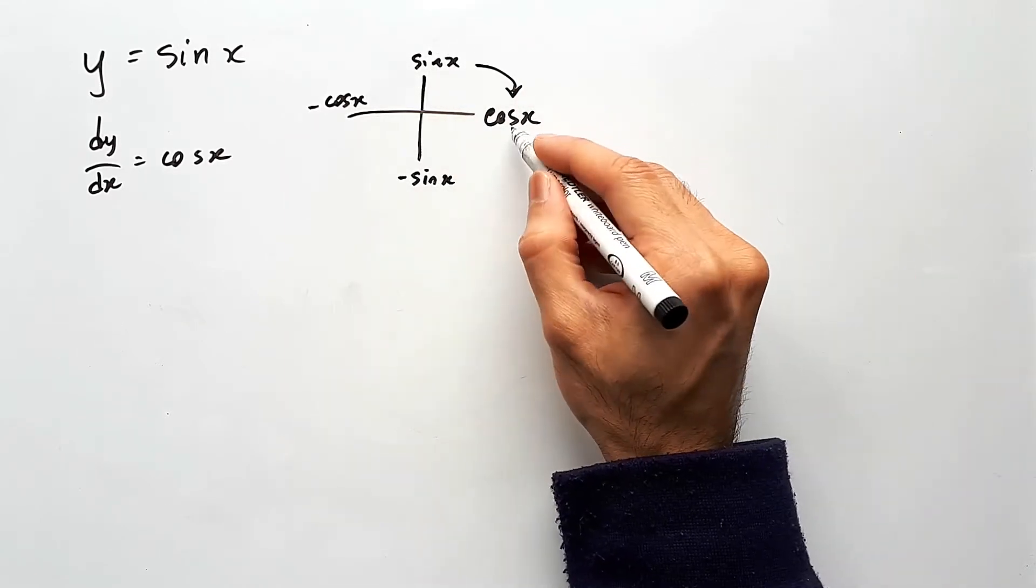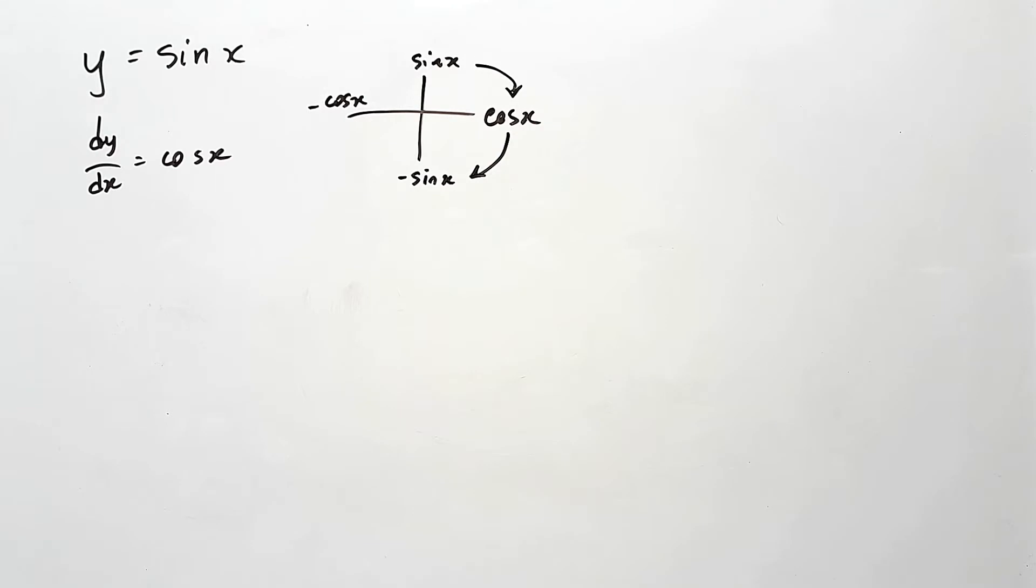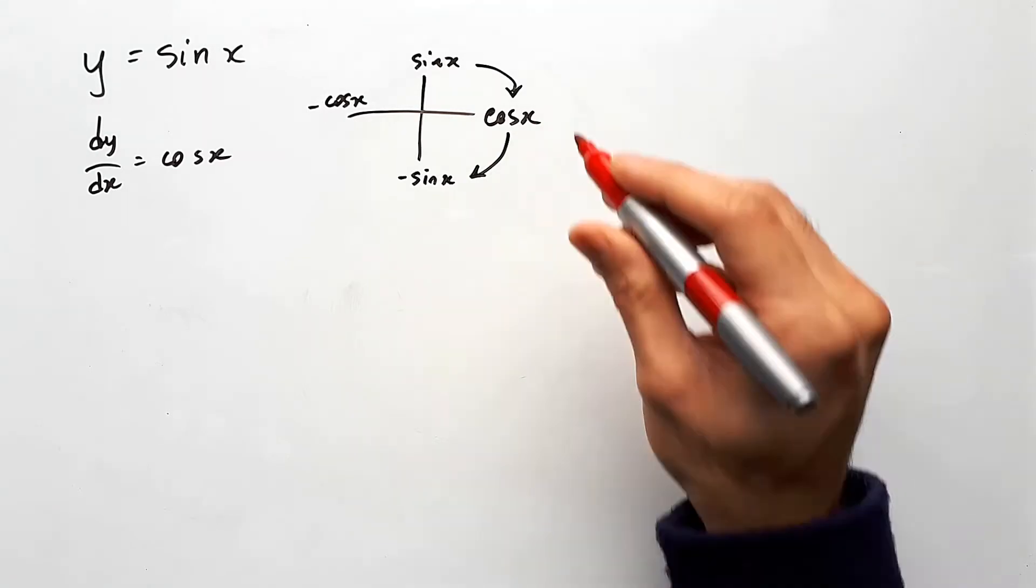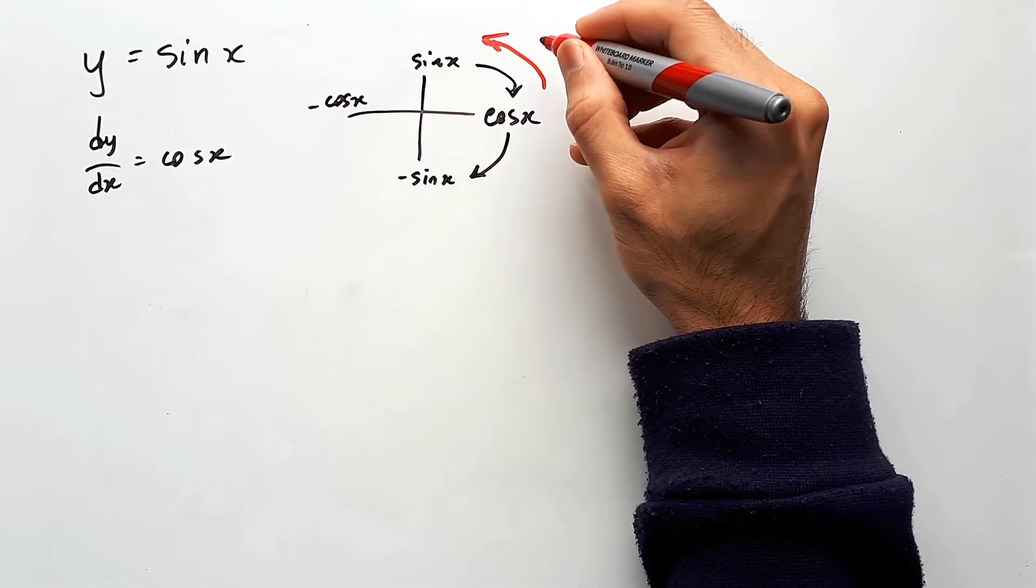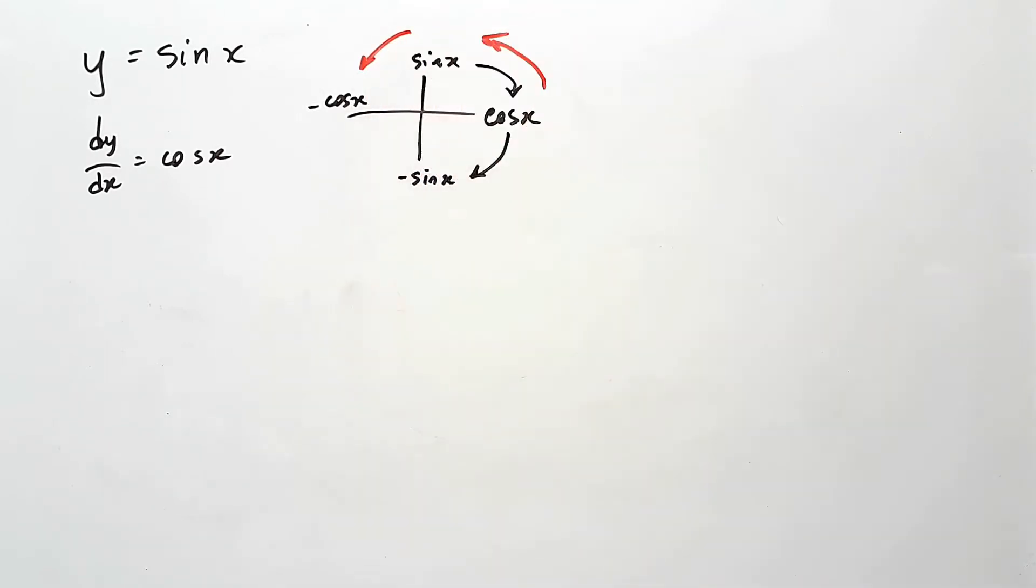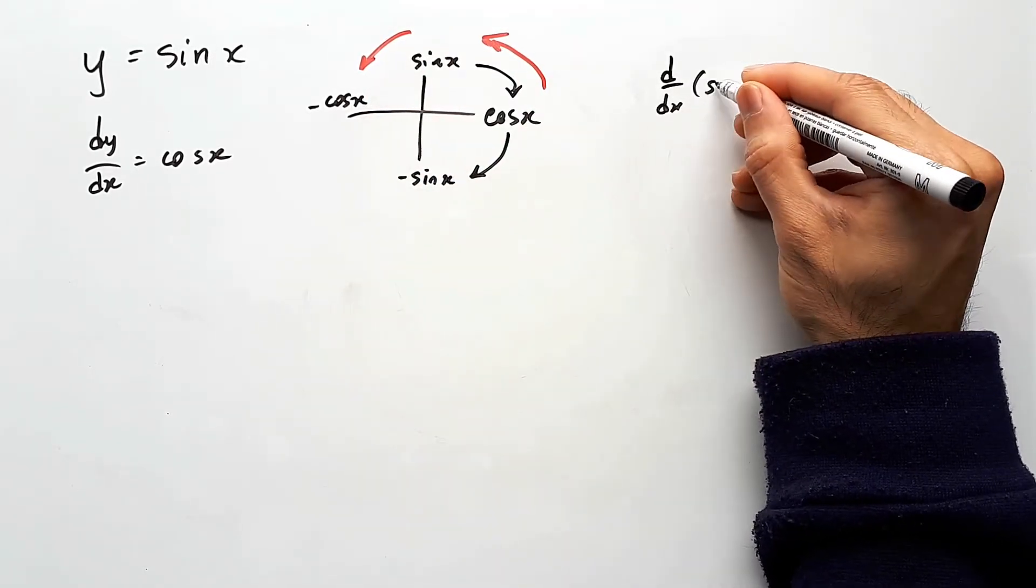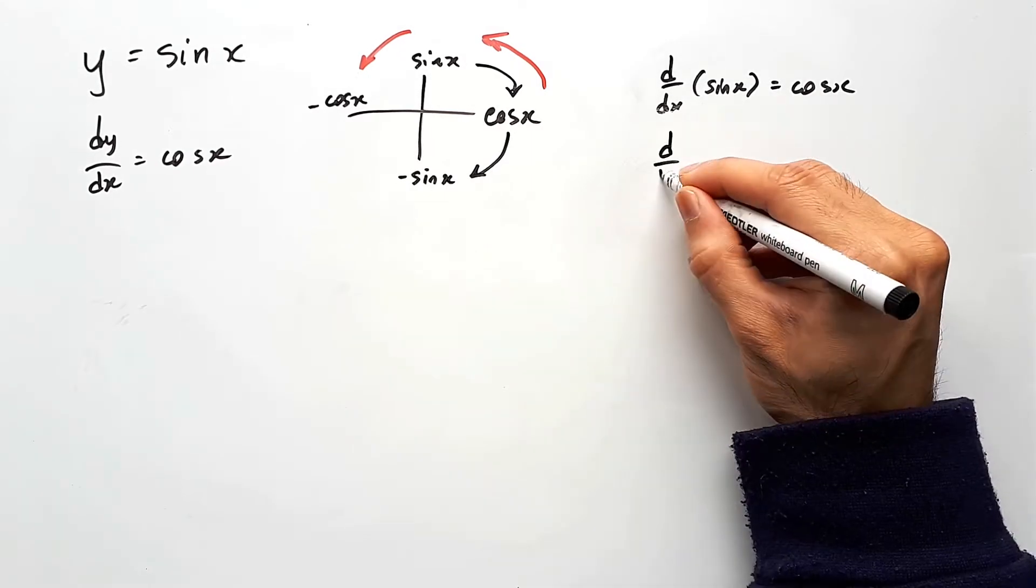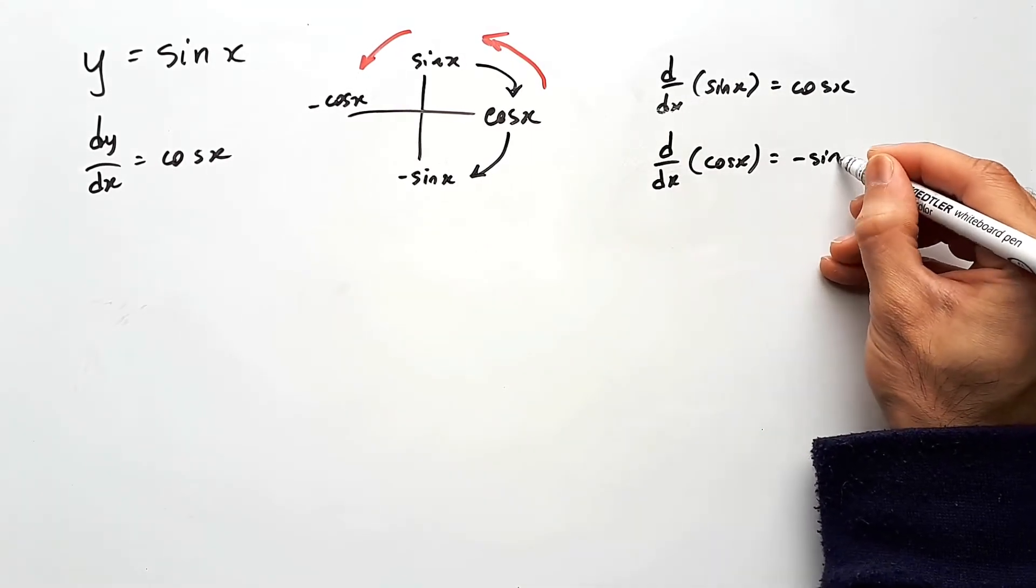Naturally, if you differentiate cos of x, you would get negative sine of x. The opposite is also true. So if you were to integrate, you would go in the forward direction of rotation. So the derivative of sine x is cos x, and the derivative of cos x is negative sine x.